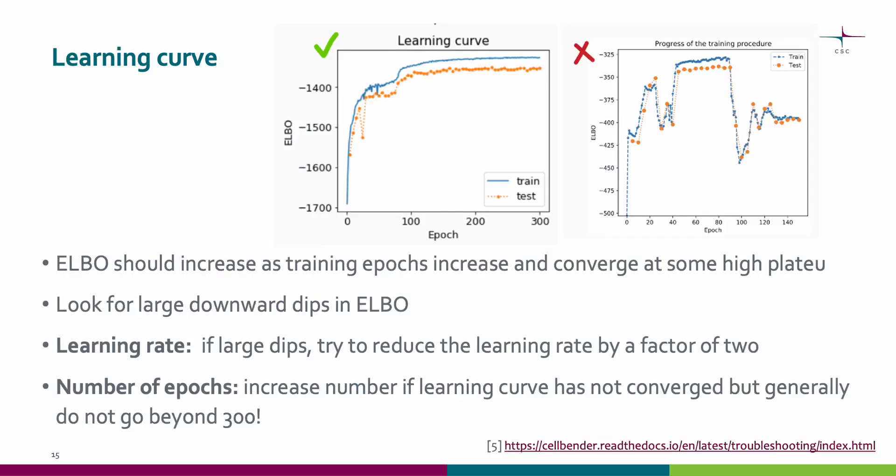Now we will move on to another type of plot in the report file — learning curves. On the left is an example of a good learning curve where the elbow increases as training epochs increase, after which it converges at a high plateau. On the right is an example of a bad learning curve where you can see large downward dips in the elbow. If you see these large dips, try reducing the learning rate by a factor of two. If you see that the learning curve does not converge at a high plateau, you can increase the number of epochs, but generally do not go beyond 300.